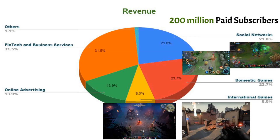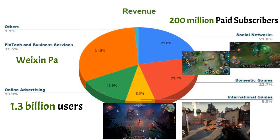The next segment is Online Advertising. As they have more than 1 billion users on their apps, they show ads in different formats. And the last important segment is FinTech and Business Services, where they have the payment system Weixin Pay and make money from commissions, plus they provide cloud services. So their most important segments are Gaming, Advertising, Online Payments, and Social Networks.